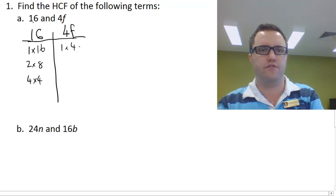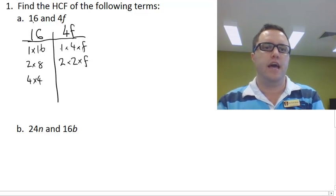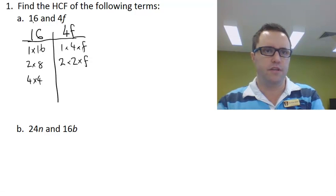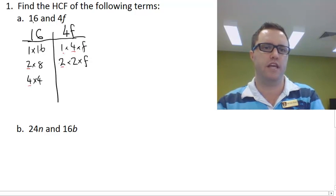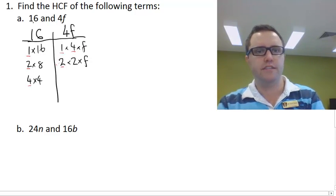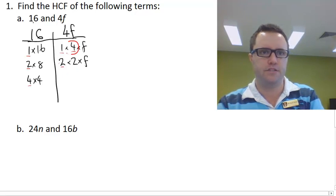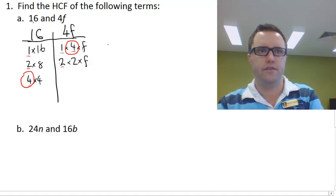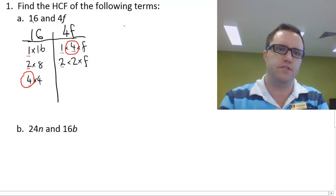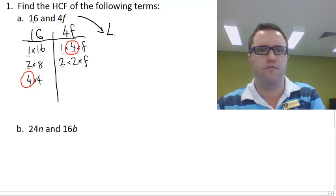For 4F, we have 1 times 4 times F, we have 2 times 2 times F. Once we've done here, we mark all of our common factors. Both sets have 2s and they have 4s and they have 1s. So what's the highest set of 2, 4, and 1? Well, it's 4. So 4 is our highest common factor of 16 and 4F.